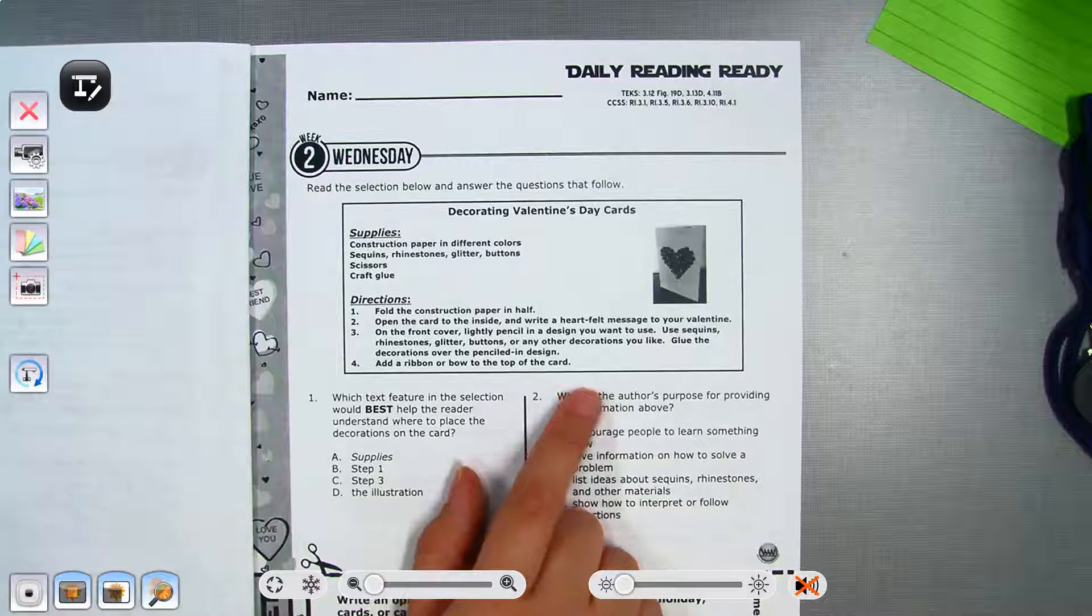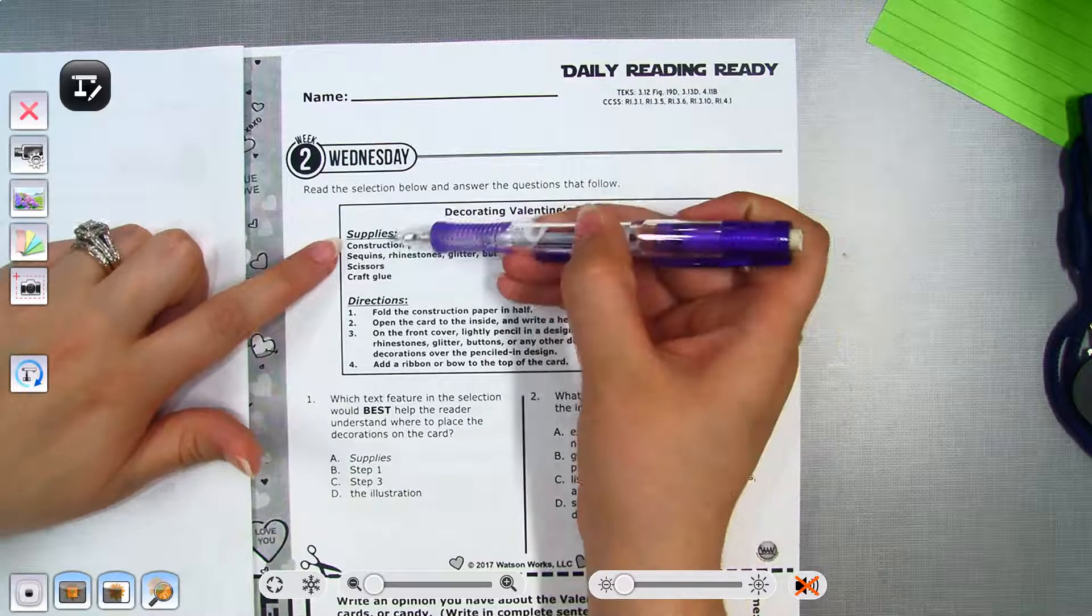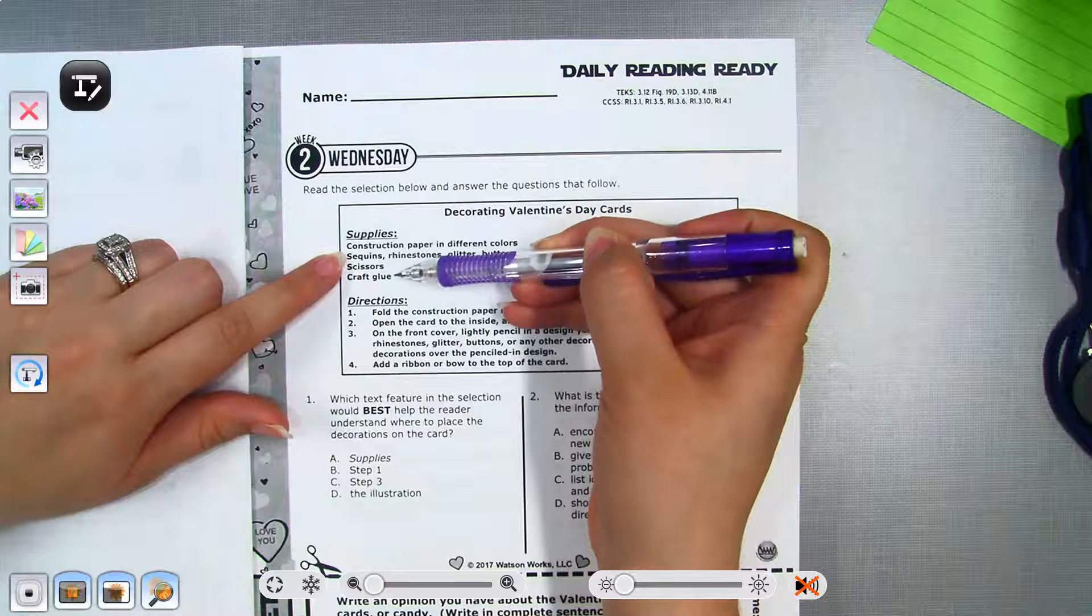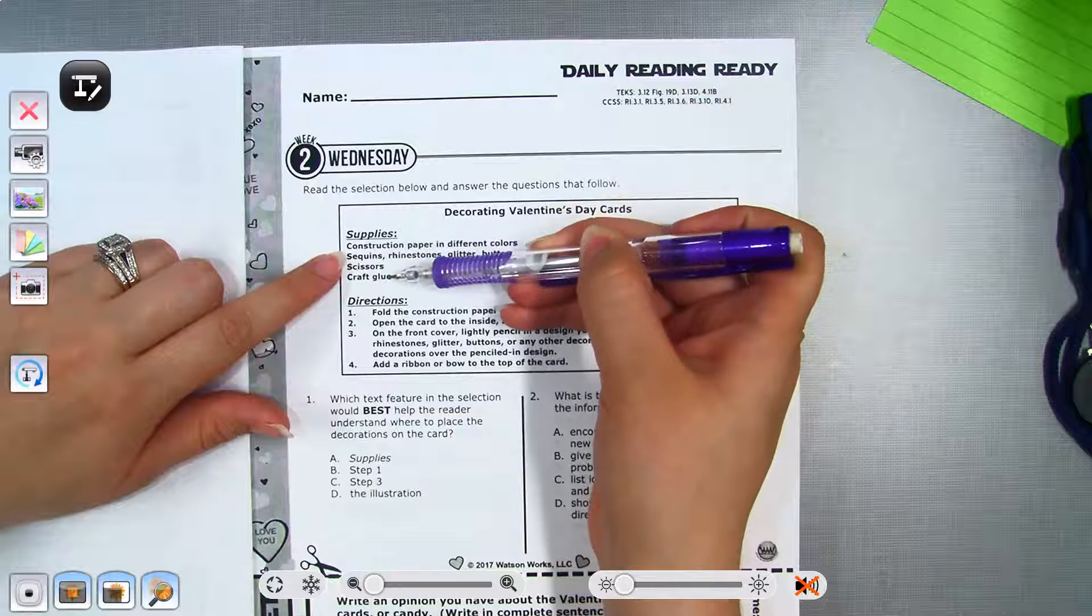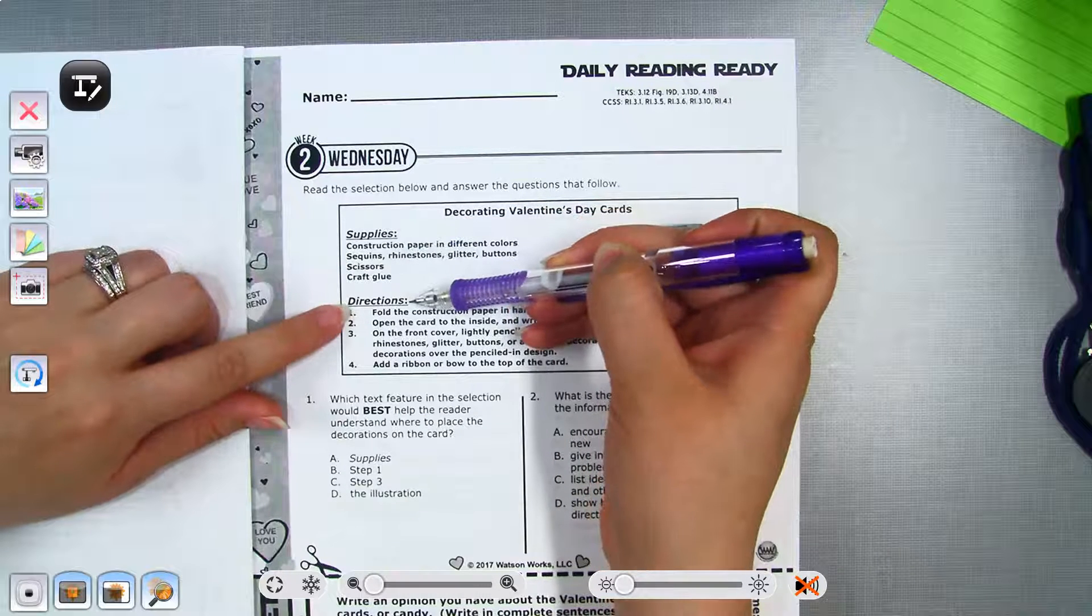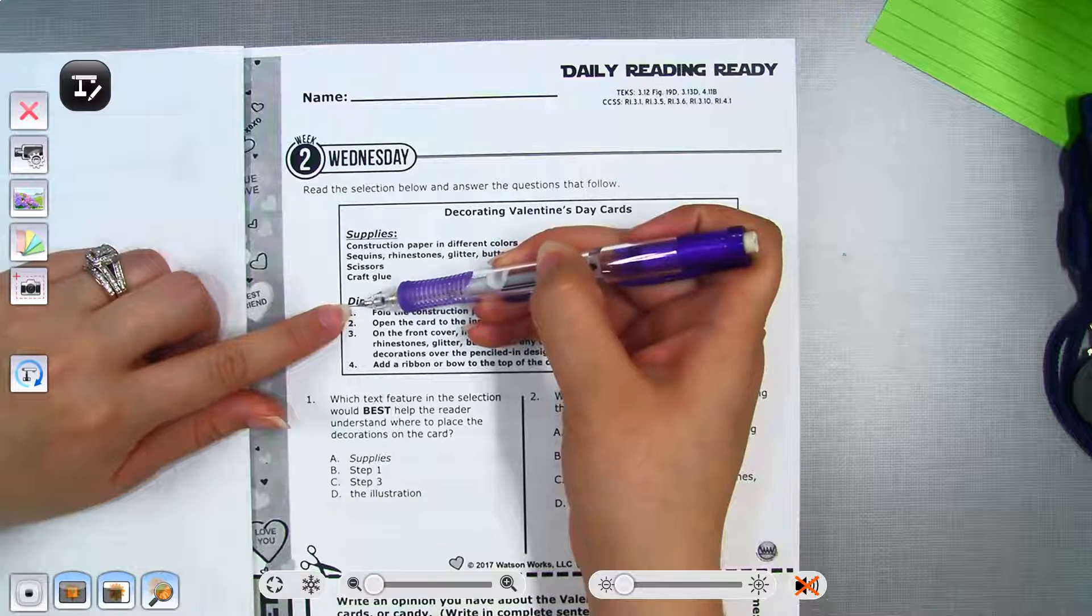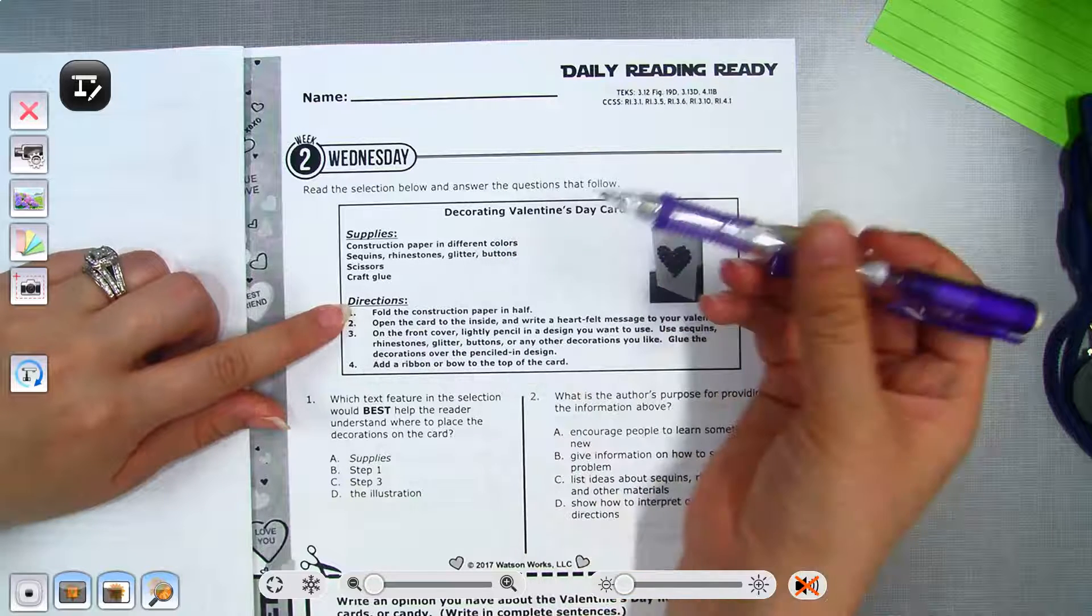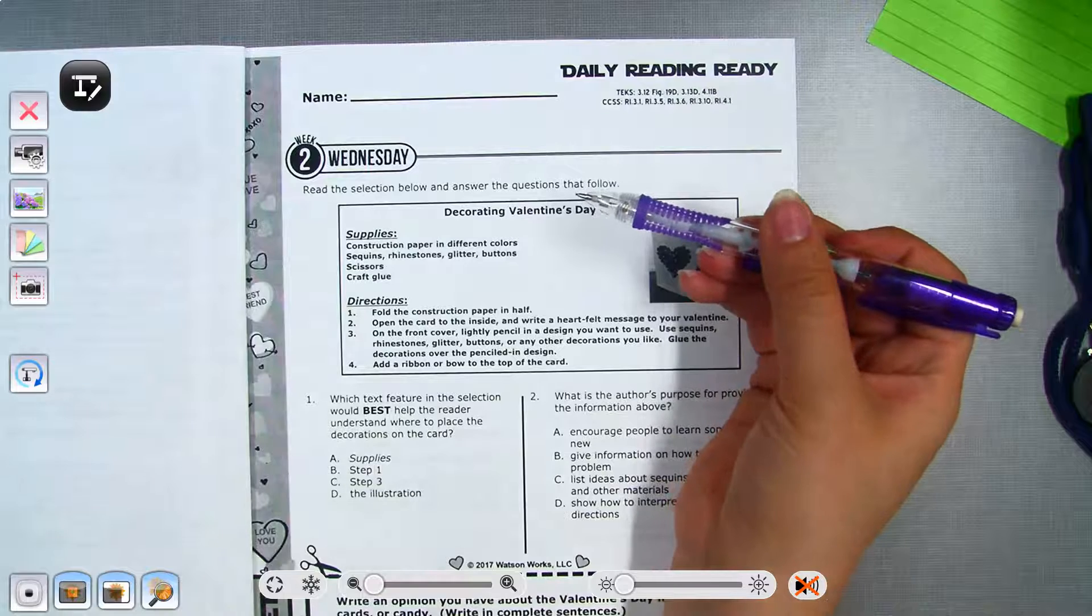Okay, so if you notice guys, there are headers. So here's the header and this is telling me that everything underneath is our supplies that we're going to need. This header is telling me that everything that's listed underneath are the directions. Okay, so let's look at some of the questions.